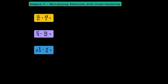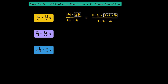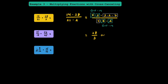In example 3, I'm going to introduce cross-canceling, which speeds up the process. I'll rewrite the problem as one fraction: 14 times 28 over 21 times 2. Finding prime factorizations: 14 is 7 times 2, 28 is 2 times 2 times 7, 21 is 3 times 7, and 2 is already prime. We can cross out all common prime factors — the 7s cancel and the 2s cancel — leaving us relatively prime. We've essentially divided by GCF 14. The numerator becomes 2 times 2 times 7, which is 28, and the denominator is just 3. The answer is 28 thirds, or as a mixed number, 9 and 1 third.